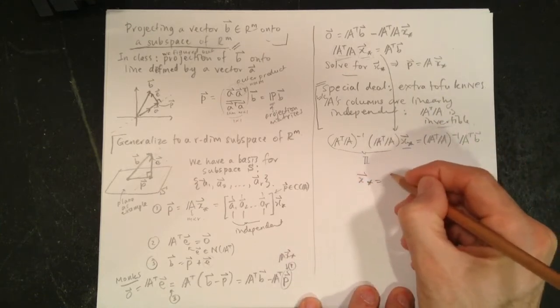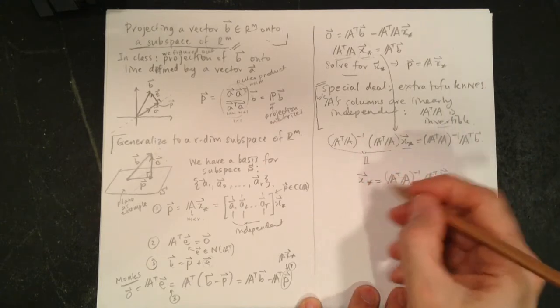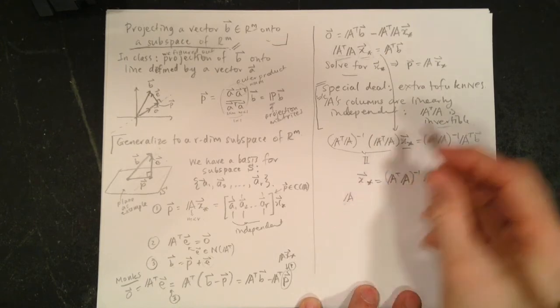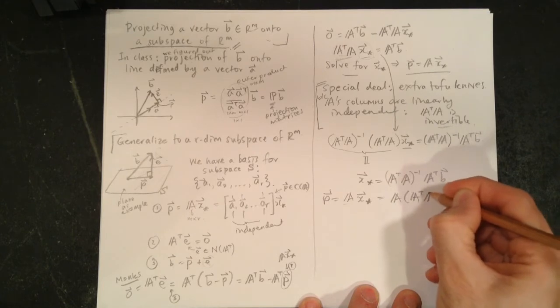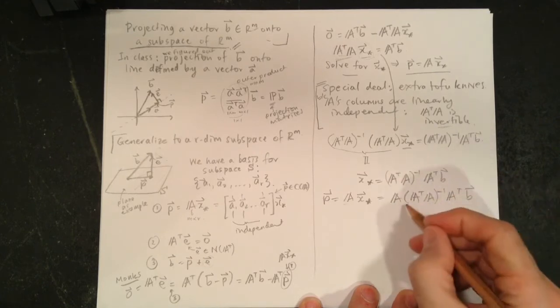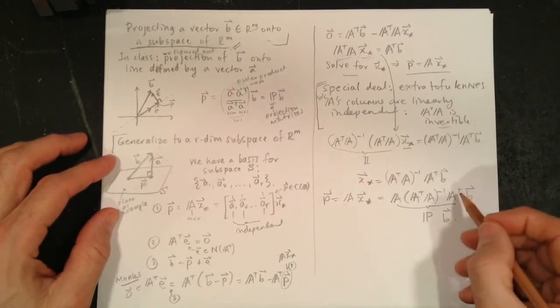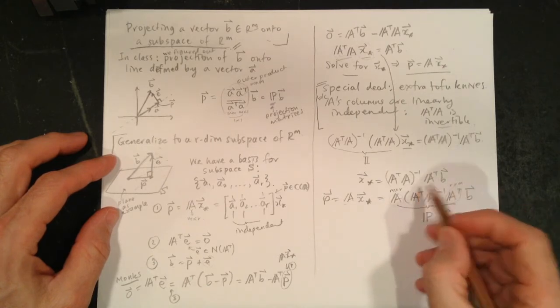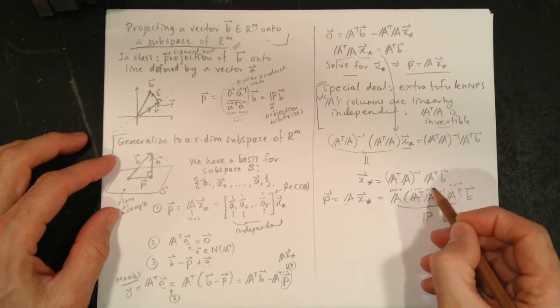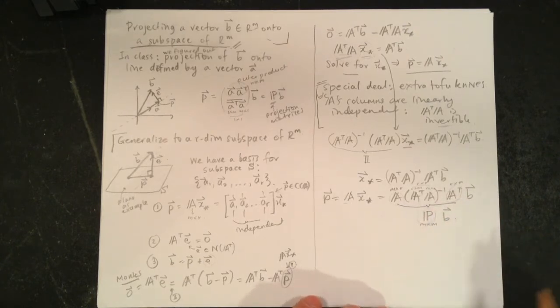So we're almost there. So now we have a solution for X star. So X star equals A transpose A inverse A transpose B. And then we can multiply both sides, pre-multiply both sides by A. Why are we doing that? Because P is equal to A times X star equals A times all of this, inverse A transpose B. So this thing is the projection matrix. So if someone gives you, and so in general, what are these guys? So this is an M by R matrix. This is R by M. This is R by M, M by R. So all of this is R by R, it's invertible. So the whole thing is M by M. So this is an M by M matrix. Multiply B with it and you will get the projection onto whatever subspace you have, every time. Beautiful.